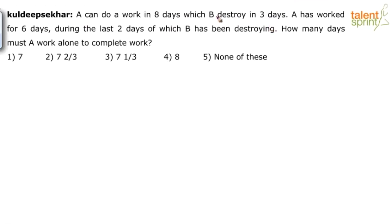It's like pipes and cisterns - outlet pipe and inlet pipe. A is like inlet pipe, A can do the work in 8 days. B is like outlet pipe, can do the work in 3 days. So the whole tank can be built in 8 days and the whole tank can be emptied in 3 days by A and B respectively.